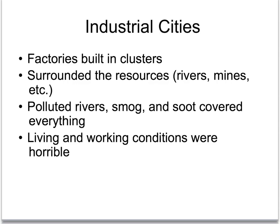Let's talk about those industrial cities. Factories were built in clusters, surrounded by resources — railroads near the mines to get coal and iron, factories on rivers to use water wheels. Polluted rivers, because factories would dump dye into them. Burning coal creates a lot of carbon dioxide — this is really the beginning of the global warming situation. There's soot on top of everything because coal burns so dirty, especially unfiltered as it was during the Industrial Revolution. Living and working conditions were horrible.